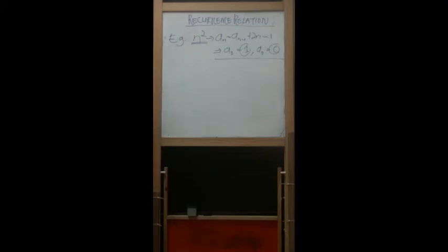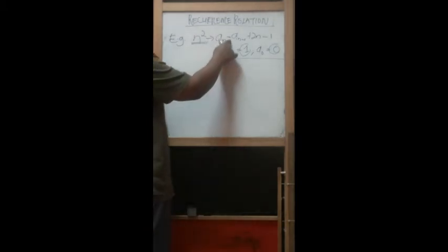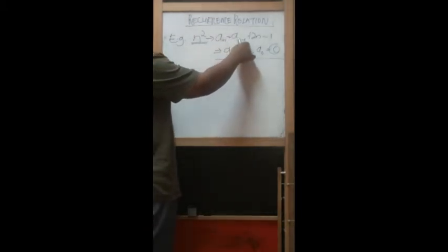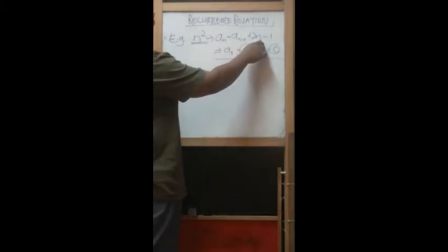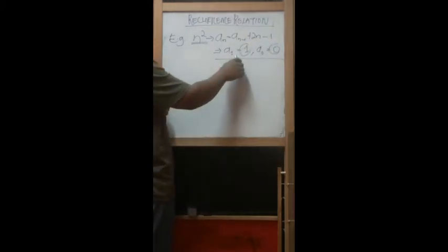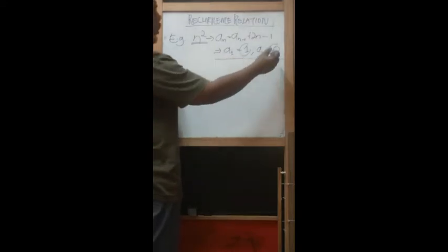Look at this, for example, very simple example for N squared. N to the power of 2 can be written as recurrence relation like this: A_N equal to A_(N minus 1) plus 2 times N minus 1. And this is the base criteria: if A_1 is 1, A_0 is 0 here.